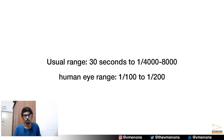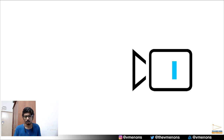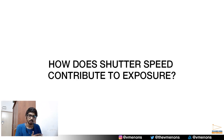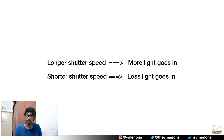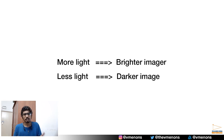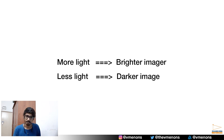Advanced higher-end professional cameras go up to 1/10000th of a second. When the door stays open for a longer time, more light gets in and reaches the sensor, so the sensor creates a bright, well-exposed image. If the shutter is open for a lesser amount of time, less light reaches the sensor and therefore your image will be darker.